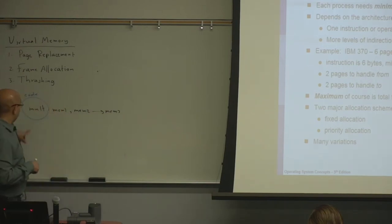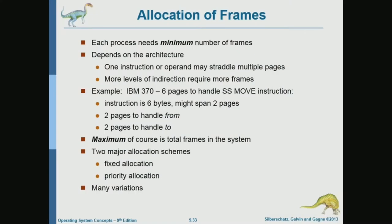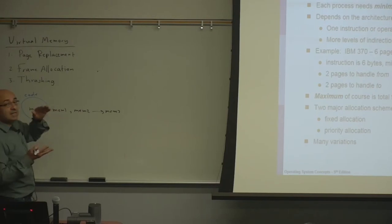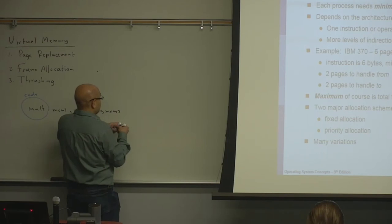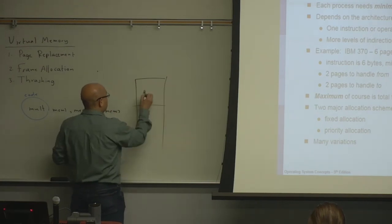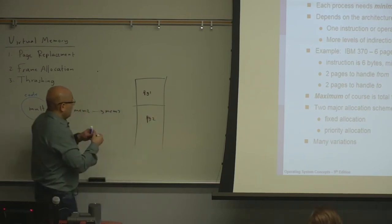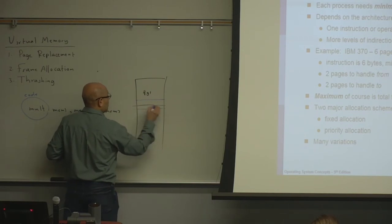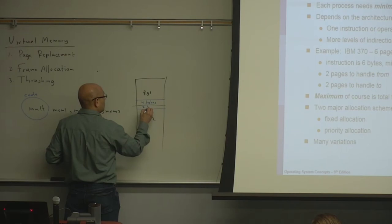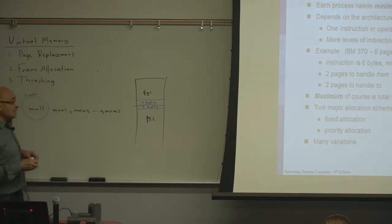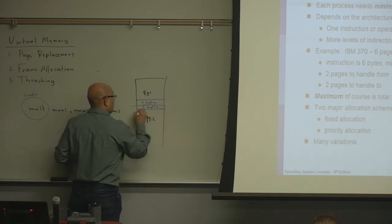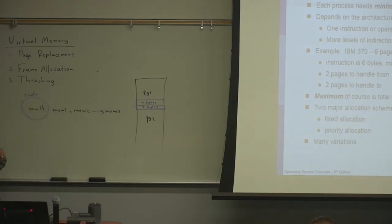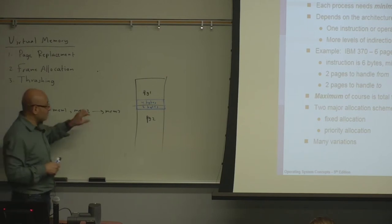On some architectures, things are even worse for two reasons. The first reason is big instructions. Some architectures, like the IBM 370 architecture, have instructions that may straddle multiple pages. It has instructions that are six bytes long and may straddle two pages. For example, an instruction might use four bytes in one page and two bytes from another page — so the instruction itself can cross two pages.